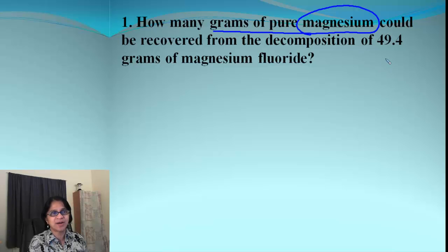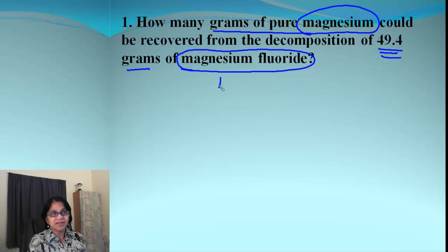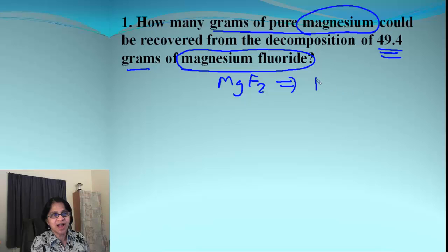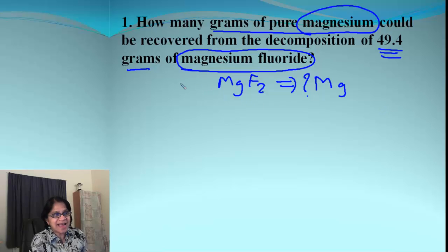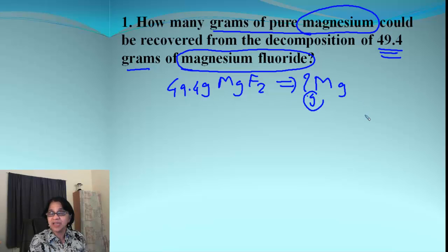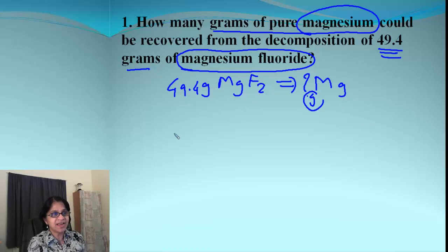Let's begin with our first problem. In this problem we are to find out how many grams of magnesium are present in 49.4 grams of magnesium fluoride. So in MgF₂ I have to find out how many grams of magnesium there are. That's my simple roadmap, and I have been given 49.4 grams to begin with.